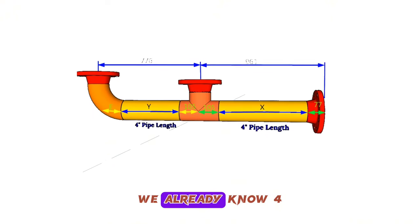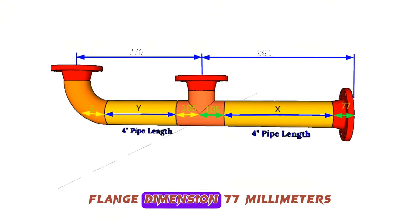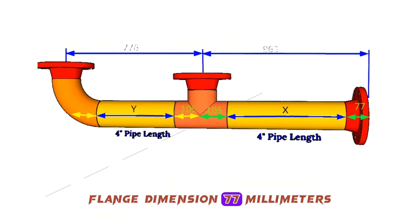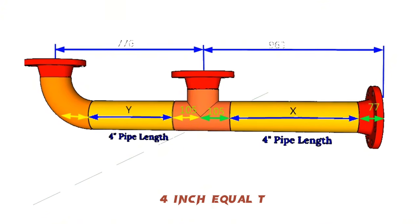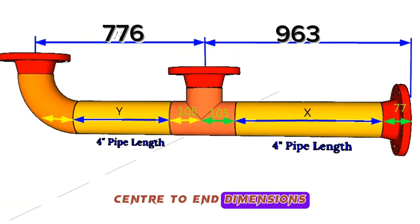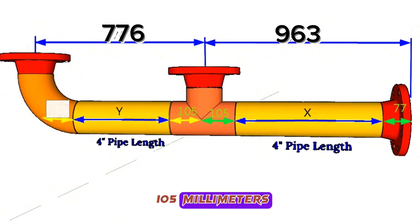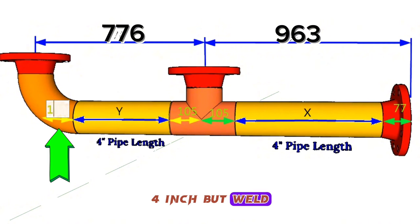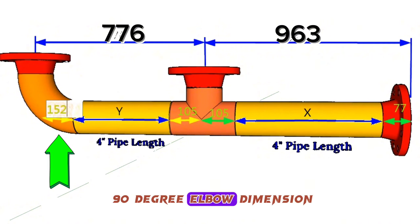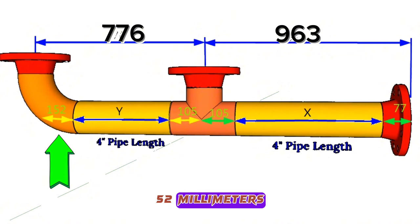We now know all the fitting dimensions: the 4-inch weld neck flange is 77 millimeters, the 4-inch equal tee center to end is 105 millimeters on both sides, and the 4-inch butt weld 90-degree elbow center to end is 152 millimeters.